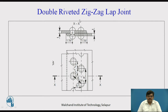Next we have double riveted zigzag lap joint. Double riveted because we have two lines of rivets. Zigzag because one rivet is placed in between the other two in front of it — opposite to it but in between those two rivets. Lap joint because one plate is placed over the other. This is the section view; the cutting plane passes through here, cutting this rivet so it is clearly seen, whereas the rivets not cut by the section plane are shown in dotted lines.